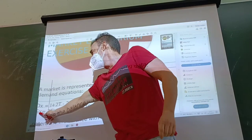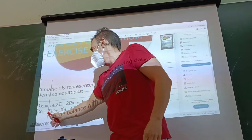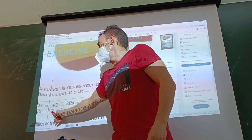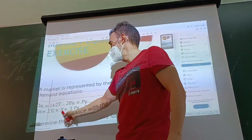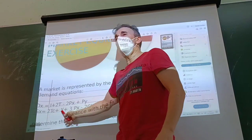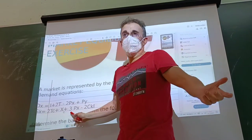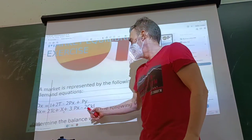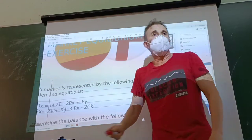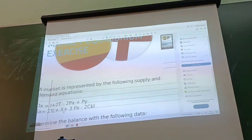And supply, or offer — this is: technology, expected price of this product, and cost of production, which includes capital or labor.